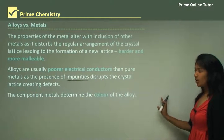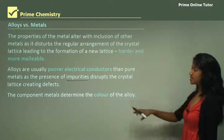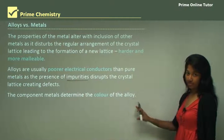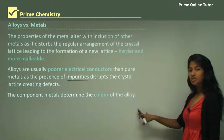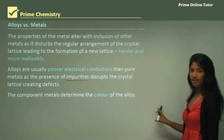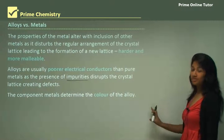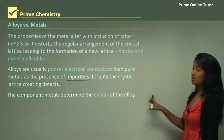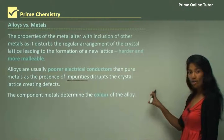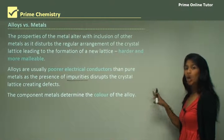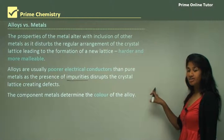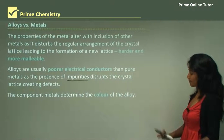The component metals determine the colour of the alloy. So different components would determine the colour. For example, a higher copper content will result in a golden colour.